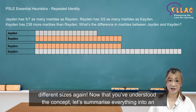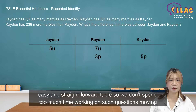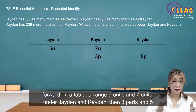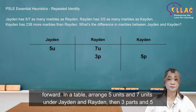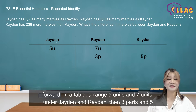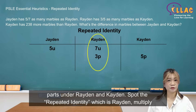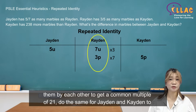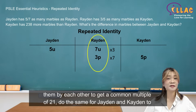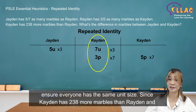Now let's summarise everything into an easy and straightforward table so we don't spend too much time working on such questions moving forward. In the table, arrange 5 units and 7 units under Jayden and Raiden. Then arrange 3 parts and 5 parts under Raiden and Kayden. Spot the repeated identity, which is Raiden. Multiply them by each other to get a common multiple of 21. Do the same for Jayden and Kayden to ensure everyone has the same unit size.